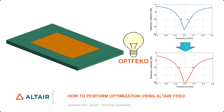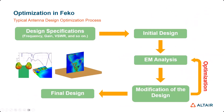To show how to set up FICO optimization, I will try to improve the impedance bandwidth of a rectangular patch antenna. As you can see here, the first slide shows the typical antenna design optimization process. First of all, we have design specifications such as frequency, gain, VSWR, and so on.